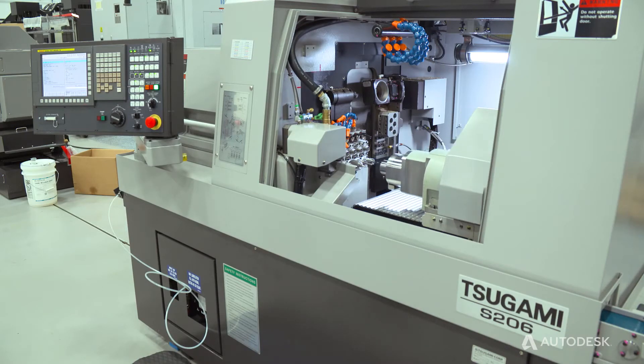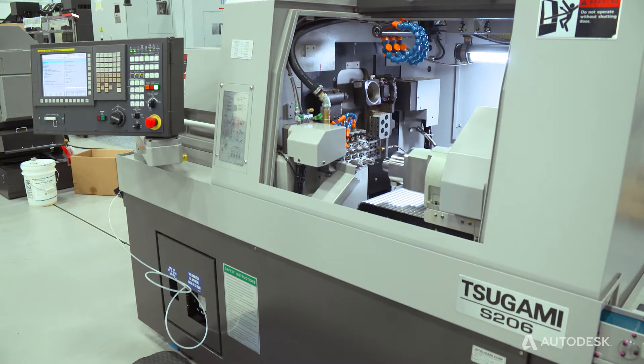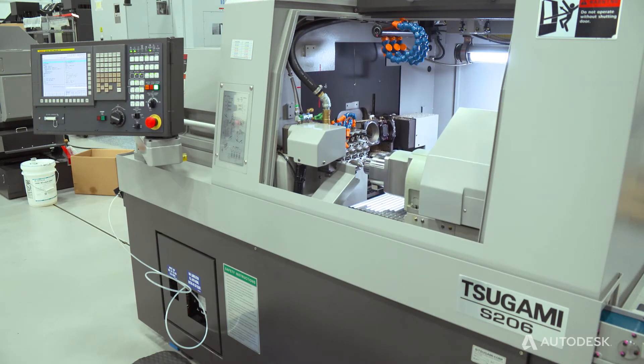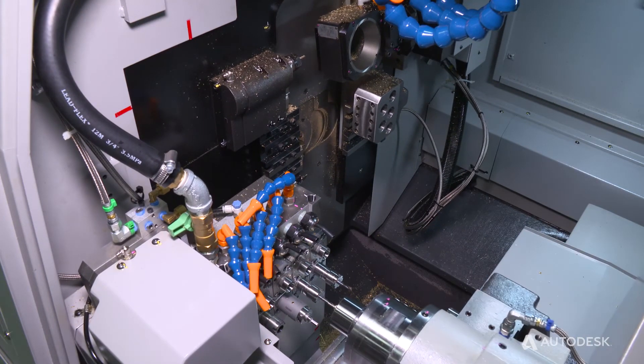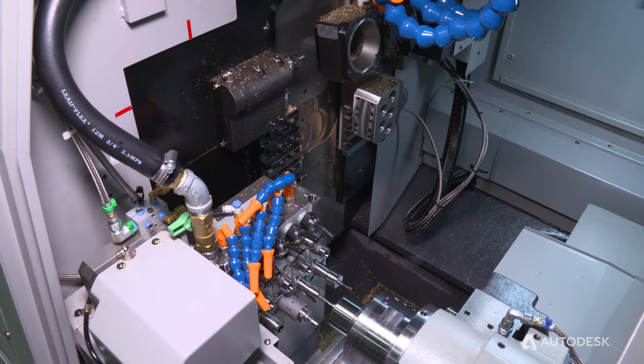Another nice benefit of the Tsugami machine is the tools are actually facing each other. This helps in many ways, shorter ball screw length, because your tools are actually opposed from each other instead of one long slide going all the way across.